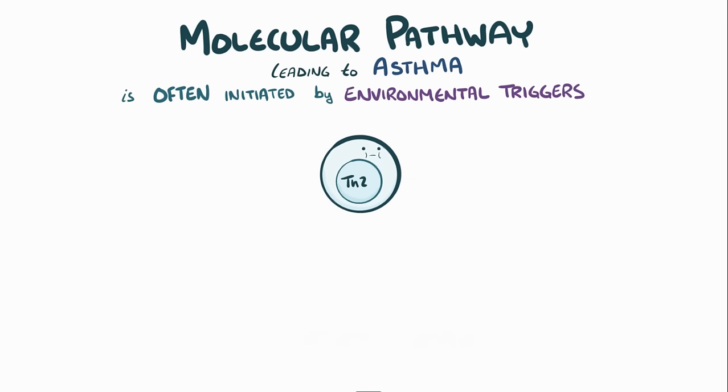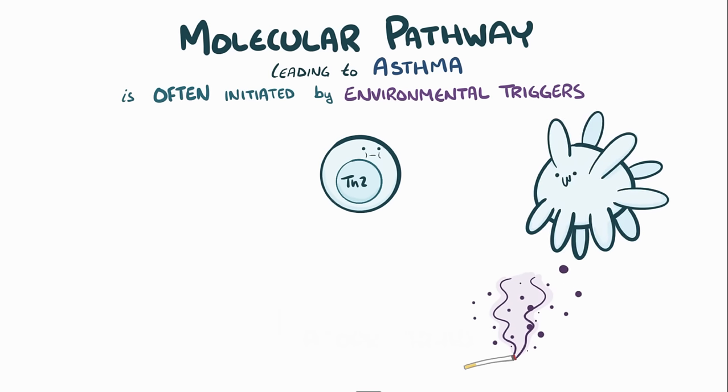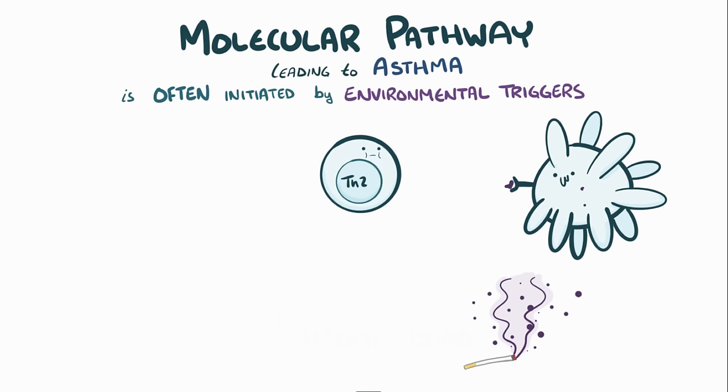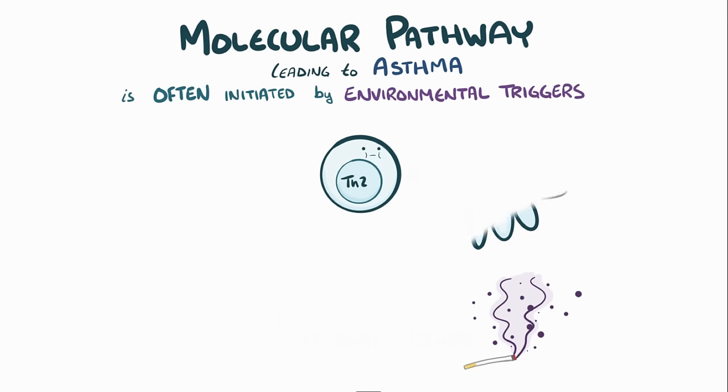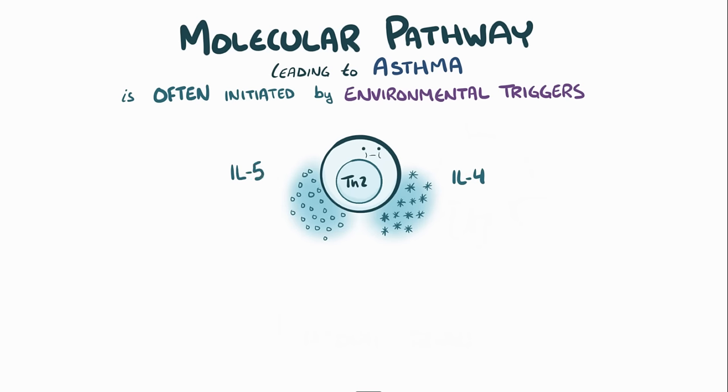What can happen with asthma is allergens from environmental triggers, like cigarette smoke, are picked up by dendritic cells, which present them to Th2 cells, which produce cytokines like interleukin-4 and interleukin-5, leading to a number of the features of asthma.